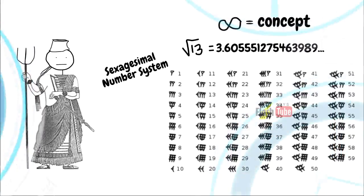Sexagesimal number system has a base 60. That means they represent all real numbers using 60 symbols. This is different from the base 10 or the decimal number system that we use today. The 10 symbols being the digits 0 through 9.